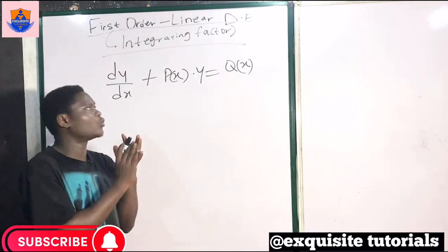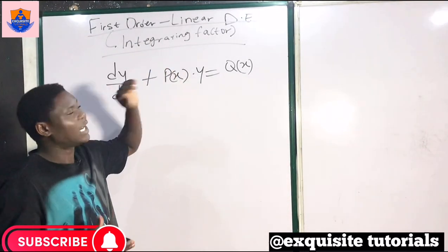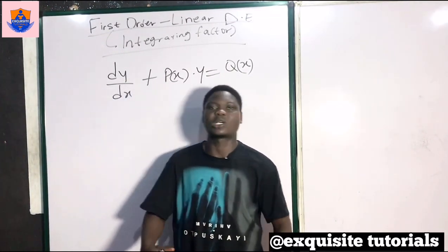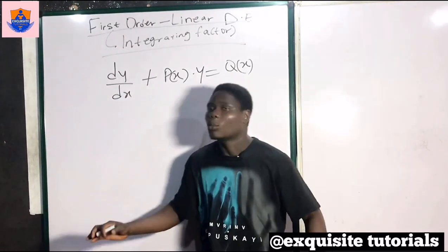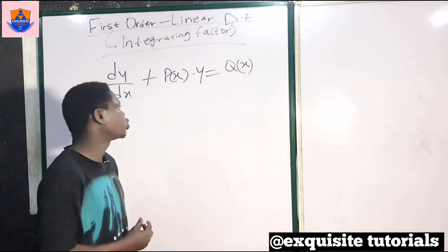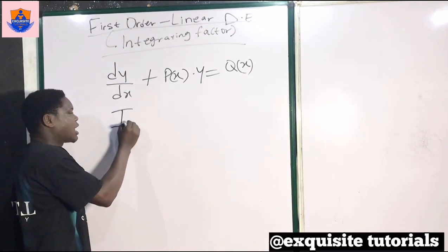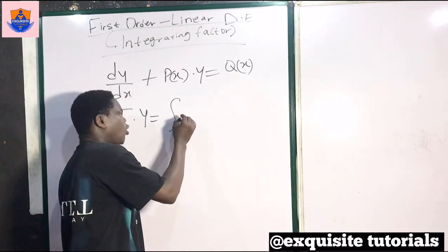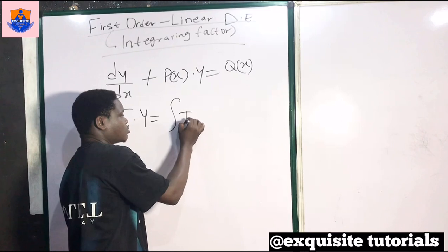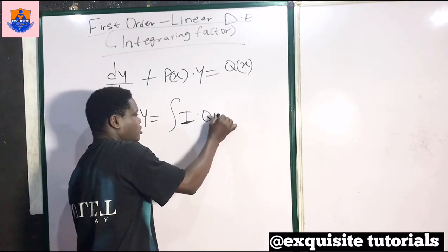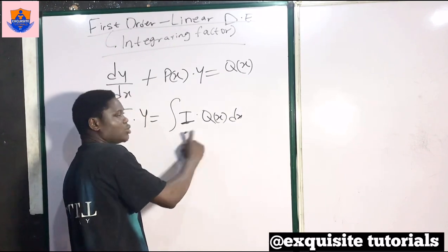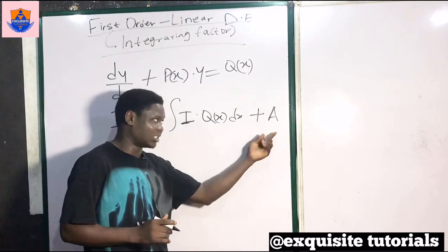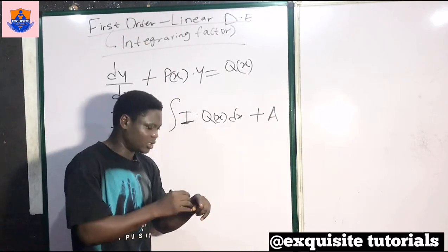I will not show how the integrating factor was derived, but if you're interested, I will drop the link in the description so you can watch my other engineering videos. I'll go straight to the answer: the solution to the differential equation is i times y equals the integral of i times q of x. When you integrate this there will be a constant — let's call that constant a, so there's no need to write the constant again during integration, but you have already written it.